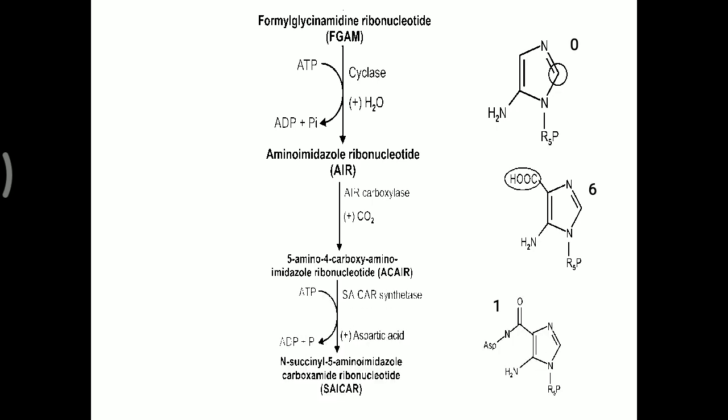Further, ACR is converted into CICAR (succinyl aminoimidazole carboxamide ribonucleotide) with the help of synthetase enzyme, using ATP again. Aspartic acid adds one more nitrogen at the first position of the purine ring structure. ATP is utilized, and ACR is converted into CICAR. So here you have seen 2 ATP: one for ring closure and one when aspartic acid is added.